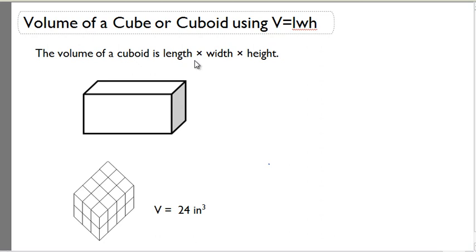To find the volume of a cube or a cuboid, we can use one of two formulas. The first formula is volume equals length times width times height.